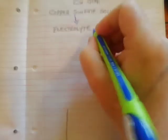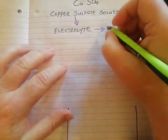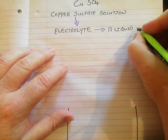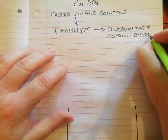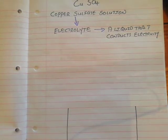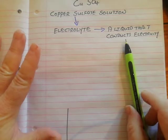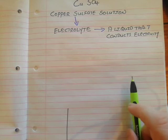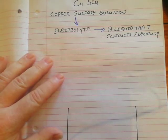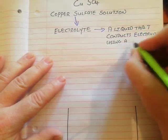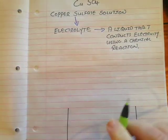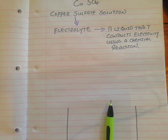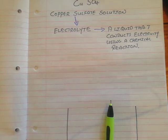What is an electrolyte? Well, in its basic form, an electrolyte is a liquid that conducts electricity. Everyone that studies chemistry is now shouting at me saying that is not exactly what an electrolyte is — and they're correct. An electrolyte is a liquid that conducts electricity using a chemical reaction. Mercury, for example, is a liquid that will conduct electricity, but not with a chemical reaction.